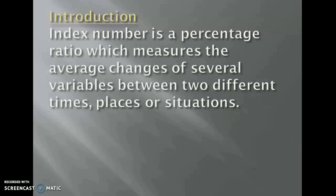Formerly the index number was constructed by an Italian called Mr. Carly in the year 1764. This is done to compare the changes in price for the year 1750 with the price level in 1500. So this was done to study the effect of discovery of America on the price level in Italy. Initially the index numbers were designed to study the changes in the price level or the purchasing power of money.